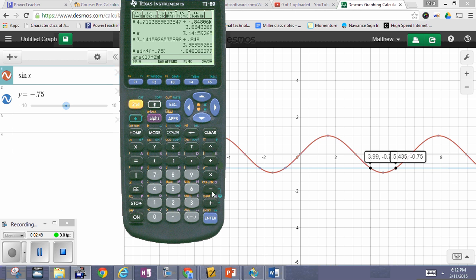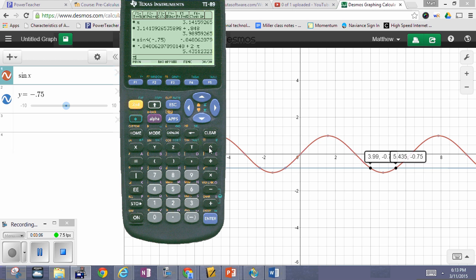2 pi added to that gives me that. That's that 5.45 right there. Now the other value, the other value is going to be pi plus that. So pi plus that value, that 0.848 should give me that 3.99 value. As you can see, it does right there.